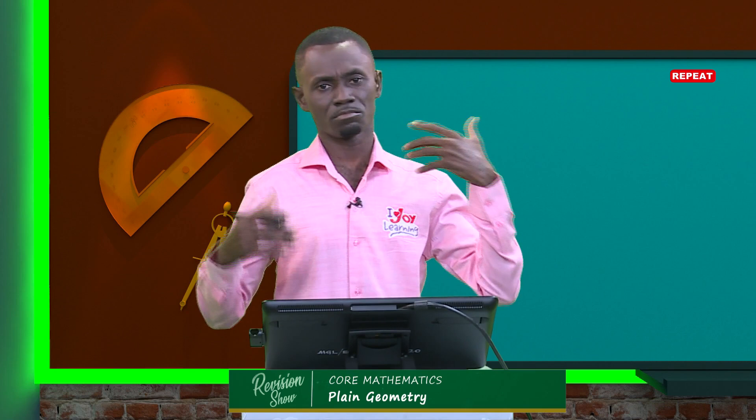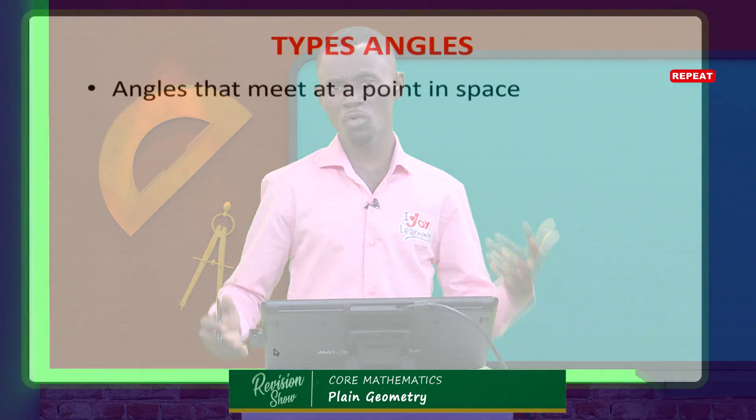We have categorized angles based on their meeting point or meeting place. There are two primarily: angles that meet at a point sum up to 360 degrees forming a circle; angles that meet at a point on a straight line form half a circle, summing up to 180 degrees.